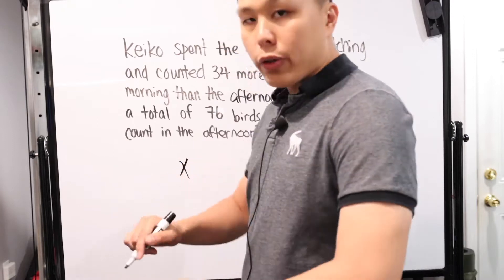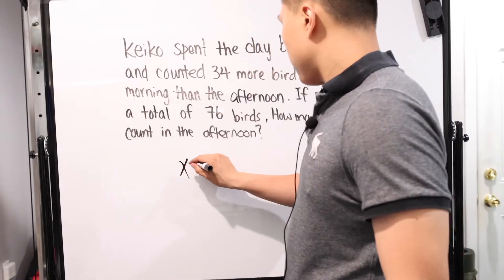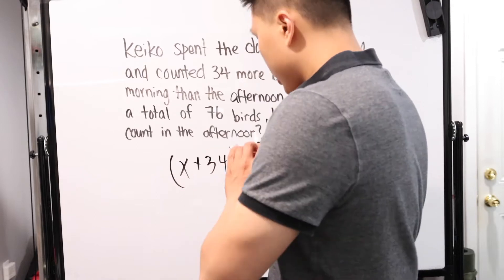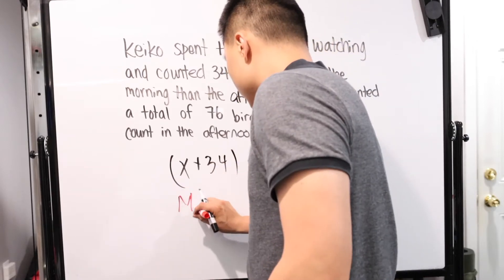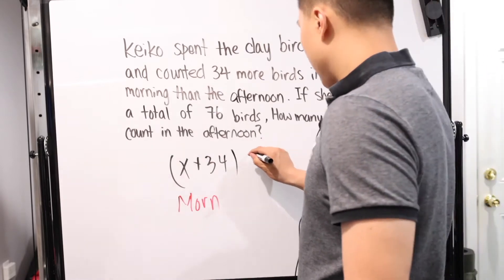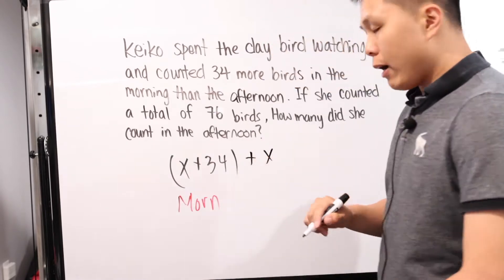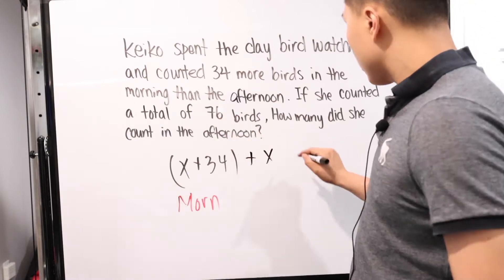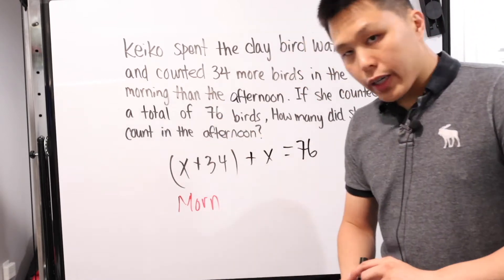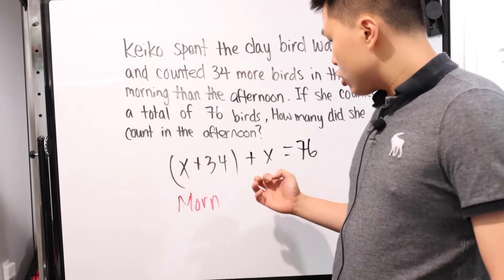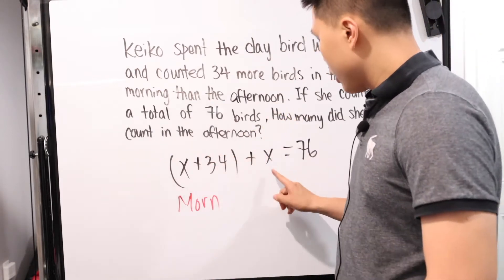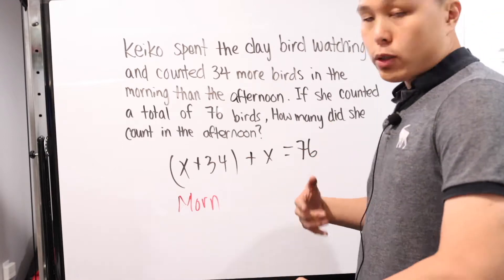In the morning, however, we know that there are 34 more birds. So we'll call X the number of birds counted in the afternoon, and morning is X plus 34. She counted that number, that mysterious number we don't know about, and at the end the total is going to be 76. So we have our standard equation and we just need to solve for X — the afternoon count.